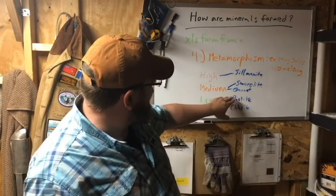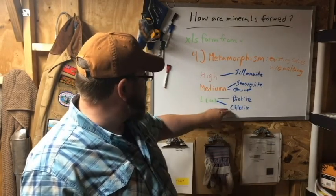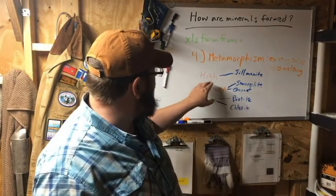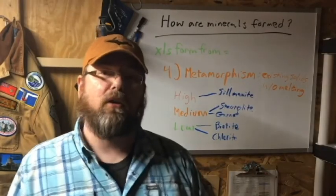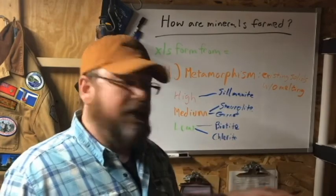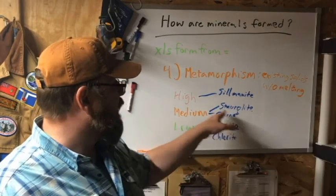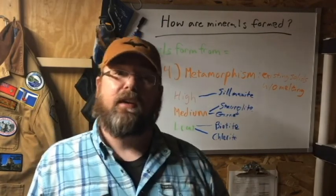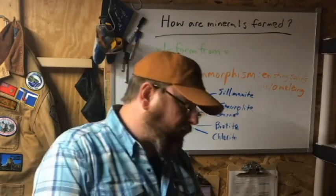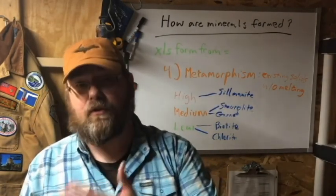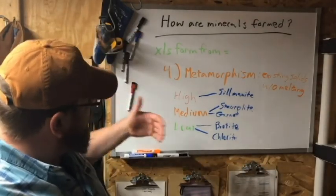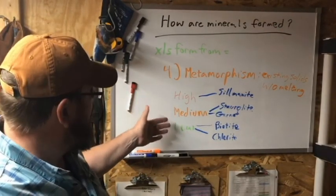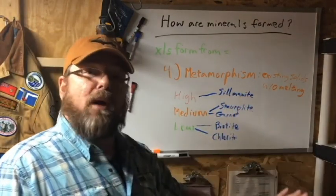These are minerals typically associated with each grade of metamorphism. At low grade, you have chlorite and biotite; at medium grade, garnet and staurolite; at high grade, sillimanite. This is common in the upper peninsula. To see this mineral progression, you need what we call a parent rock — a rock with the right chemistry. The rock types that work really well for this are mudstones, shales, slates, and to a lesser degree siltstones. It doesn't work with quartzites because quartz is stable throughout the metamorphic process, nor with marbles from carbonate rocks like limestone and dolostone — those are also stable. You need a clay-rich rock.